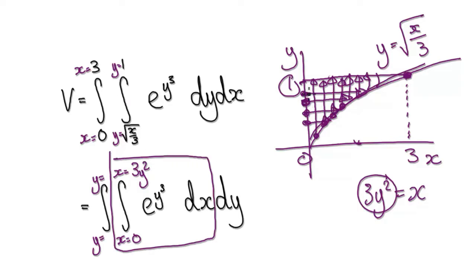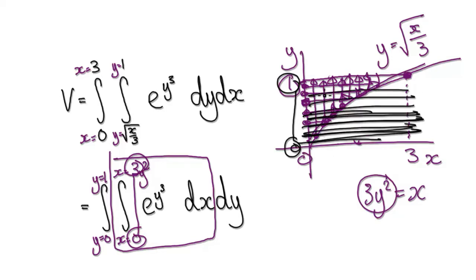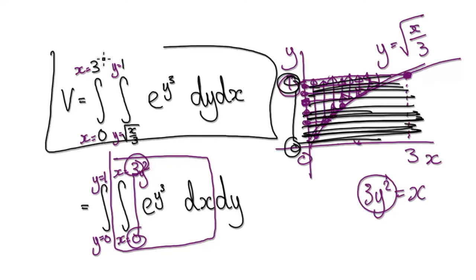So we're moving from x equals zero to the line x equals 3y², and scanning from y equals zero to one, because we're scanning all the way from y equals zero up to y equals one.